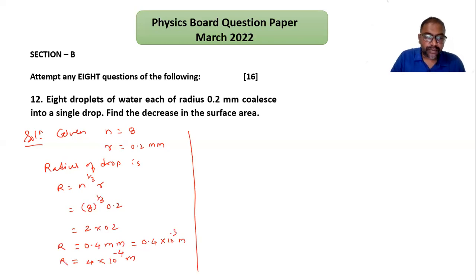Now decrease in area, I can use ΔA for that, equals area of droplets minus area of drop. Surface area of droplets, which are spherical in shape, is 4πr². So 4π small r² is the area of a single droplet.